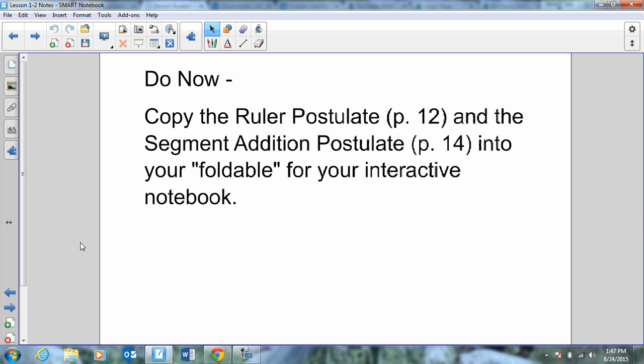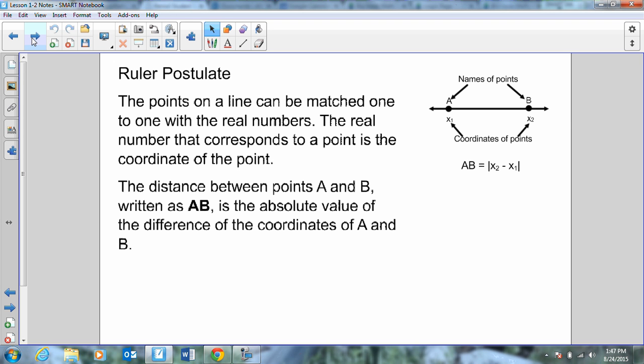So the first one that they've given us is called the ruler postulate. The ruler postulate says that the points on a line can be matched one-to-one with coordinates, and they can be assigned values. We can talk about the coordinates of the points and the distance between them.